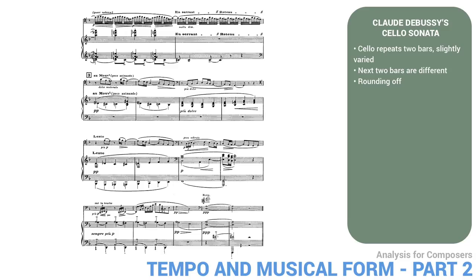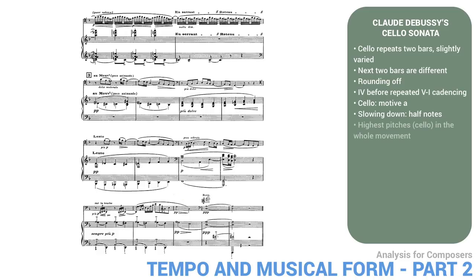The piano is now in its lower register, and its harmony ends up on a G minor chord at the eighth bar after rehearsal three. This provides a sub-dominant before the repeated 5-1 cadencing that follows. The cello repeats motive A here for the last time, before a final rise into its highest register. Although the tempo does not change in these last bars, the rhythm does, slowing down to half notes in both instruments. To make the ending more special, the cello has risen to its highest notes in the whole movement — a double harmonic D-A. The piano quietly makes the final chord major, adding the F-sharp.